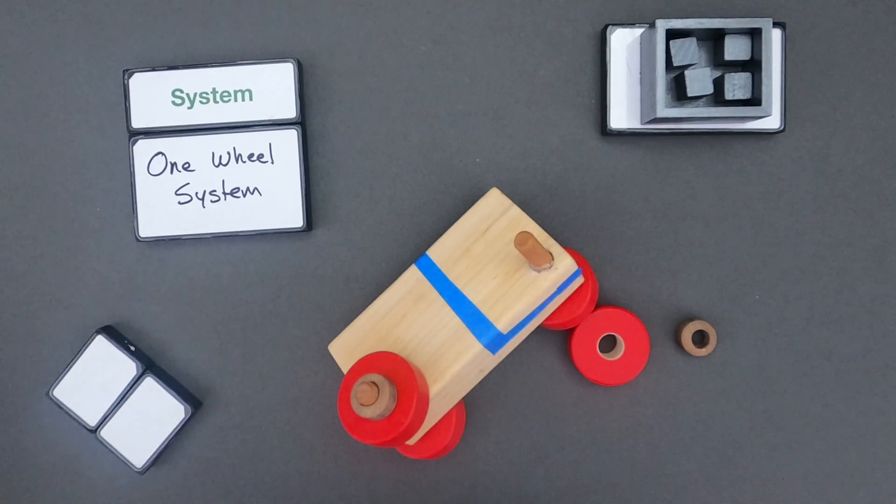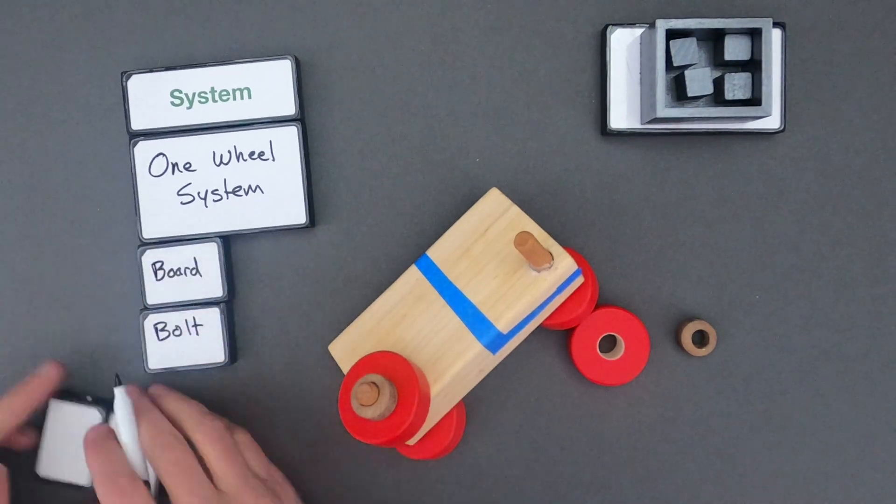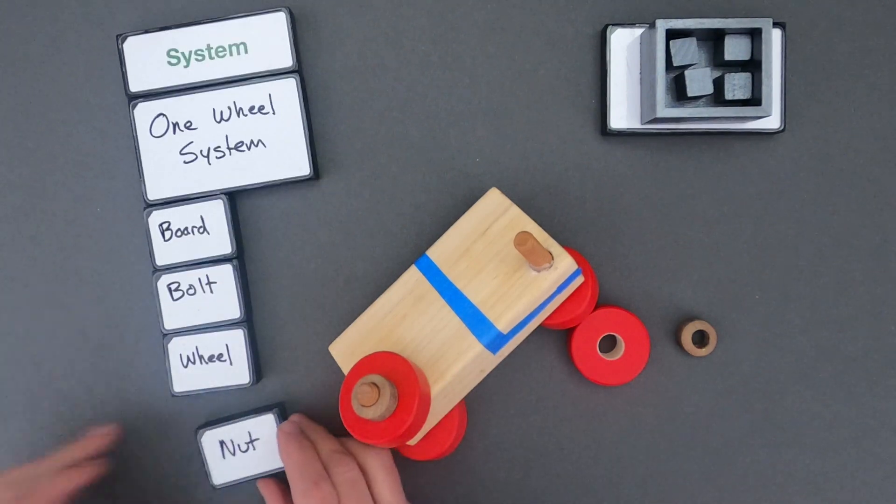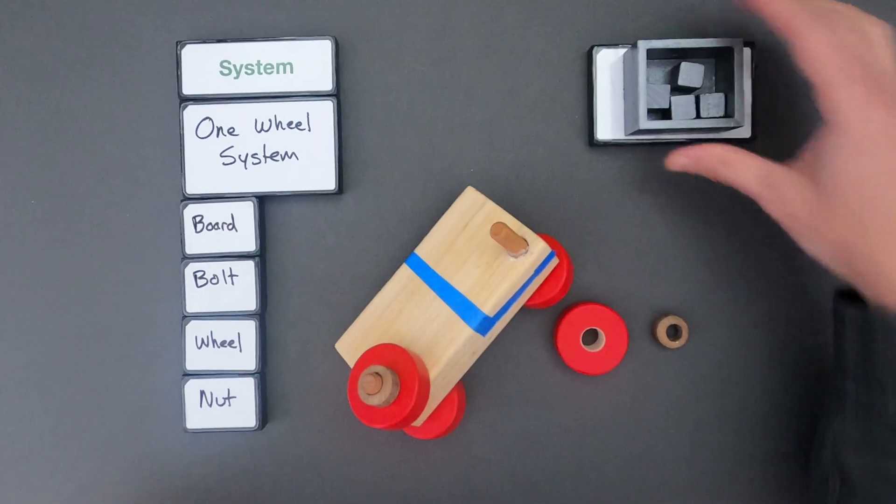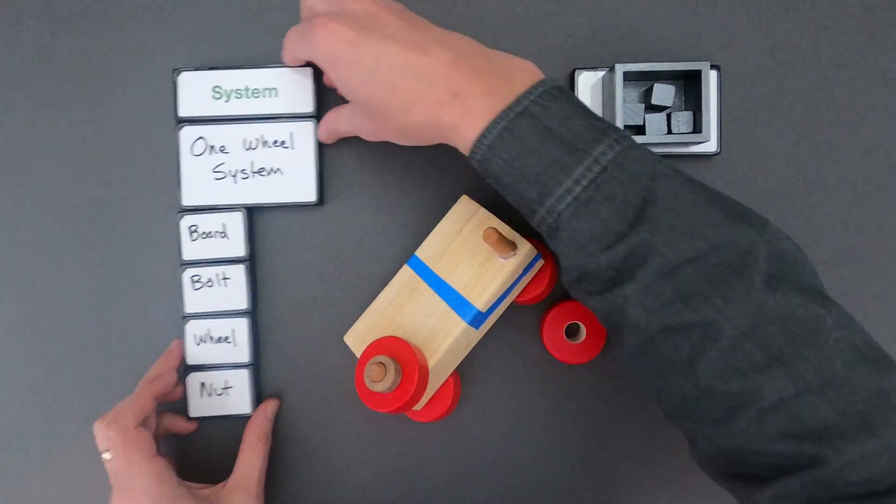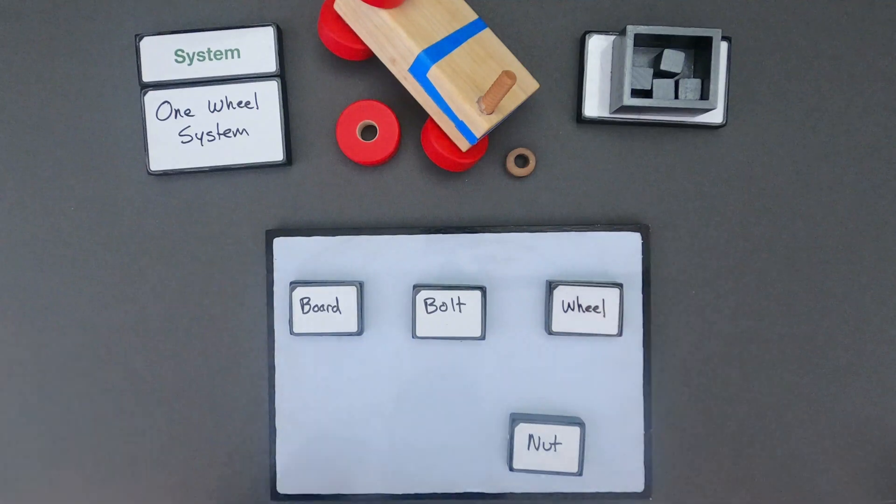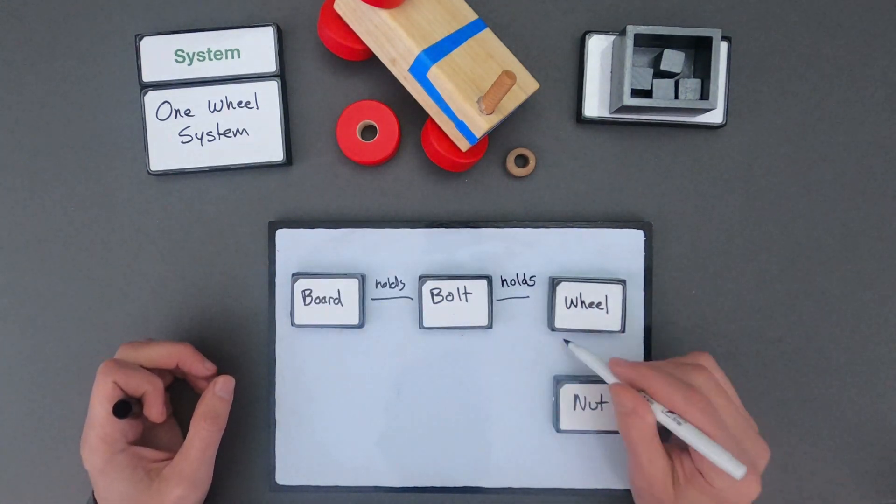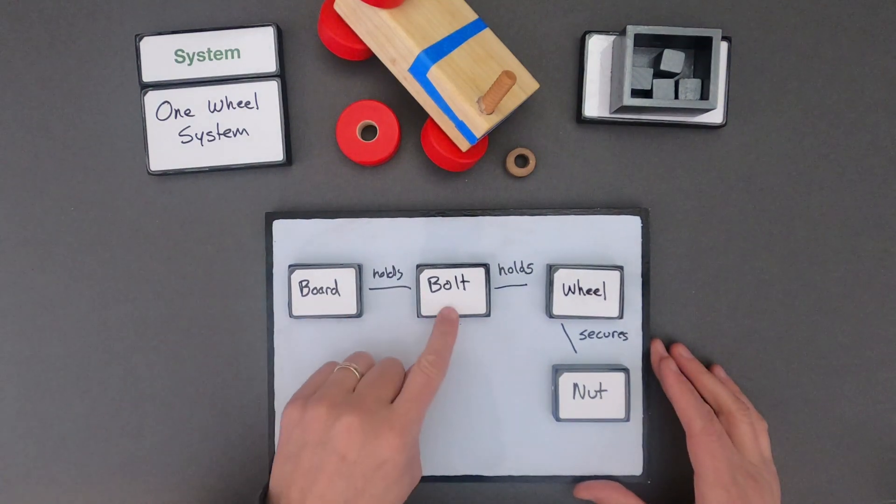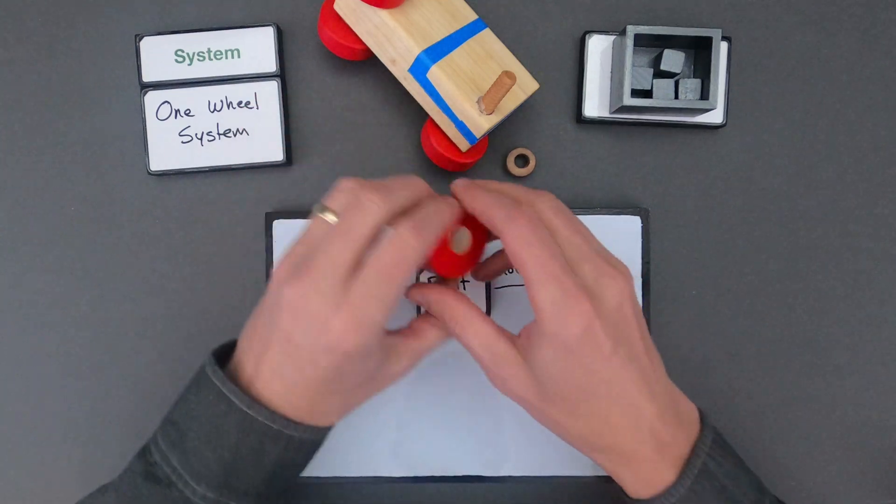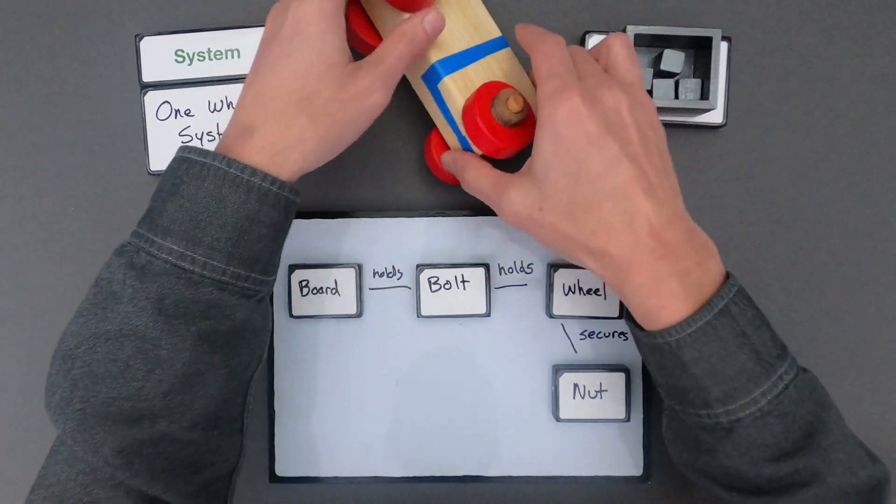So as I look at the system, the first thing I would do is write down all the parts of the system. And after I've done that, then I would show how all those parts, just like in here, how do all those parts work together. So this is how I show my system thinking. The board holds the bolt and the bolt holds the wheel. And then the wheel secures or is secured onto the bolt by the nut.